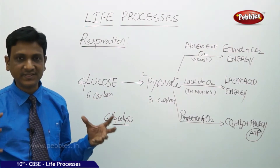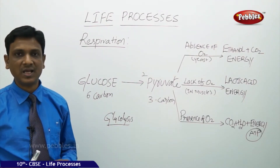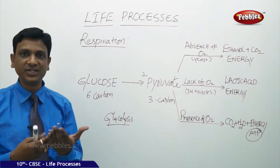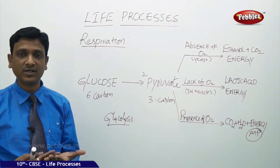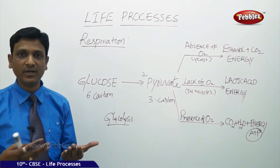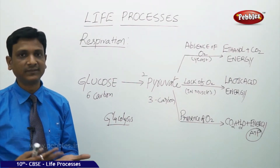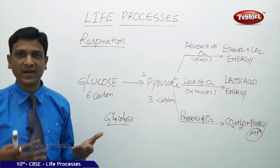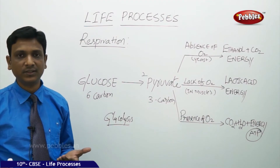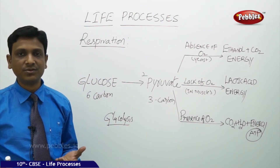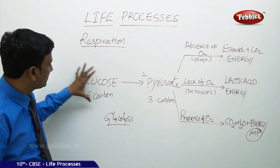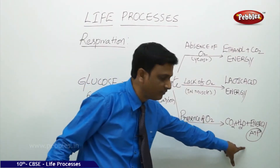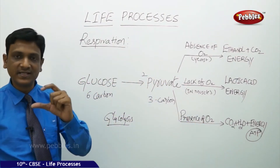ATP is called the cell's energy currency, because various activities of the cell require ATP. As an analogy: you may hold a cheque worth 10,000 or a gold bar worth 50,000, but you cannot use those to buy provisions at a shop — you need cash. Similarly, energy is packed in glucose and pyruvate, but for the cells, energy is required in the form of ATP.